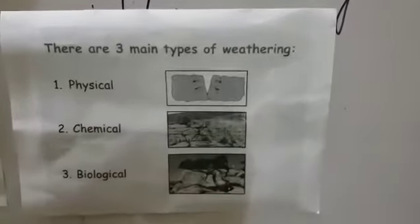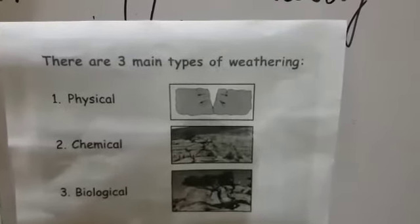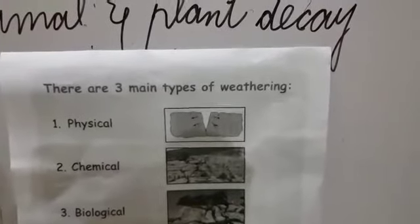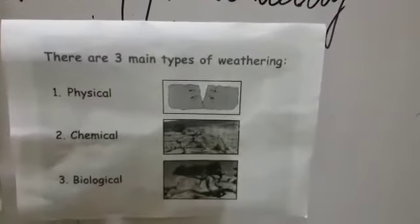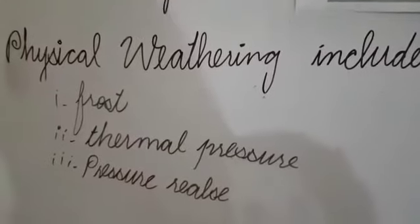What is physical weathering? Physical weathering involves the physical or mechanical breakdown of rocks without a change in its chemical composition. It means when we break down the rocks through physical or mechanical force without using any chemical — this is called physical weathering. In physical weathering there are three subtypes: frost weathering, thermal pressure, and pressure release.